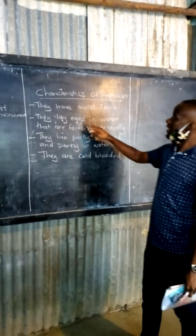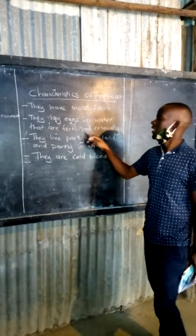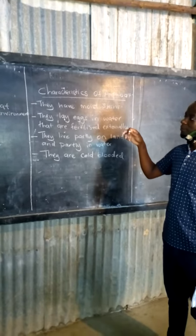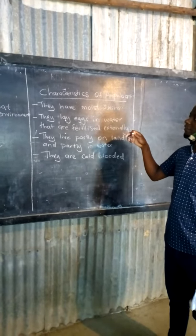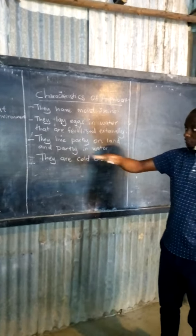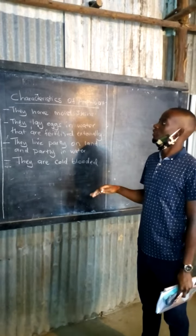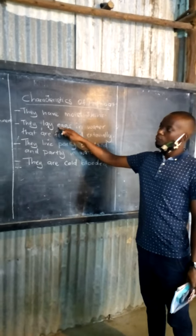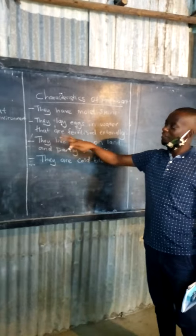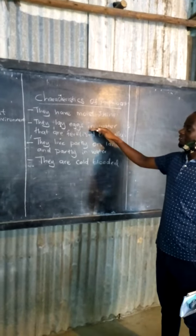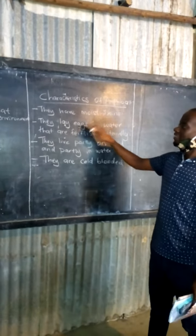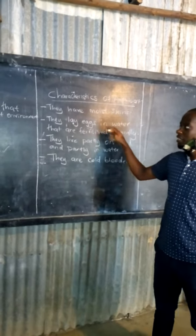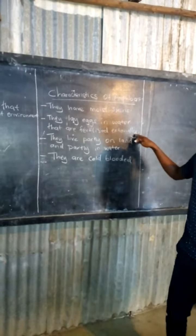The second point is that they lay eggs in water that are fertilized externally. For example, near a water source like a river, you'll find that frogs have laid eggs there. The female frog lays the eggs, and the male frog will come later and sprinkle sperm on the eggs. So they lay eggs in water that are fertilized externally.